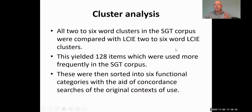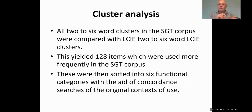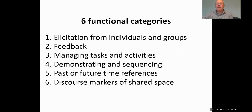From single words, we moved to clusters — words between two and six words in length. We found 128 items, that is clusters, which were more frequently used in the small group corpus than the larger corpus. We organised these by language function into six different functional categories: elicitation, feedback, task management, demonstrating and sequencing, time reference, and discourse markers of shared space.